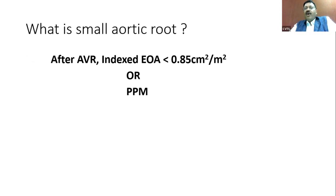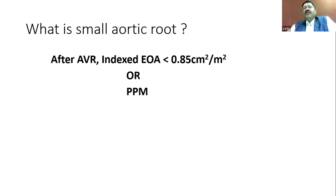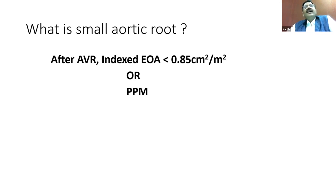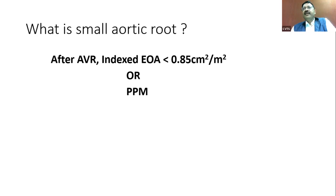How do we define a small aortic root? A single parameter cannot define it. For example, a 25 mm annulus may sound large, but for a patient with a BSA of 2.2, it may be small. A 23 mm annulus may seem small for a 25-year-old athlete, yet perfectly acceptable for an 80-year-old living a sedentary life. So small aortic root and PPM cannot be defined in isolation.